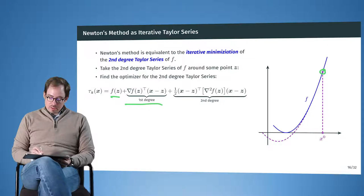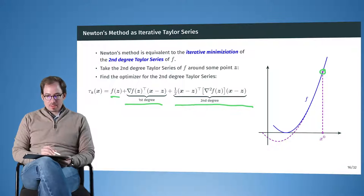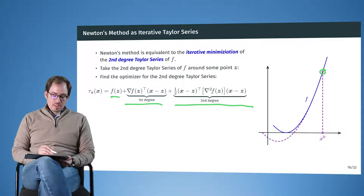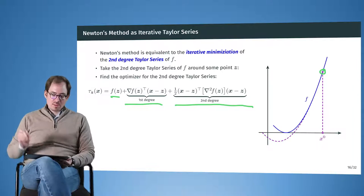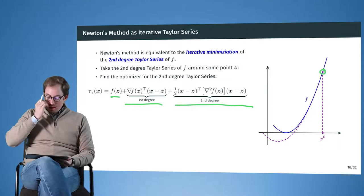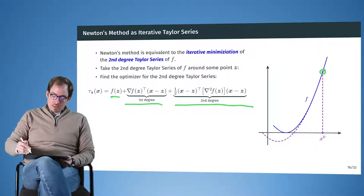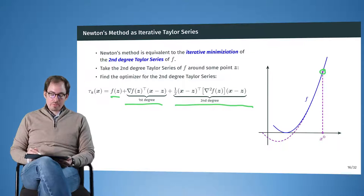And what this Taylor expansion has as a property is that its first and second derivative are exactly the first and second derivative of the function f at this location x0. And so this is a quite good, or in many cases, quite good approximation of the underlying f.